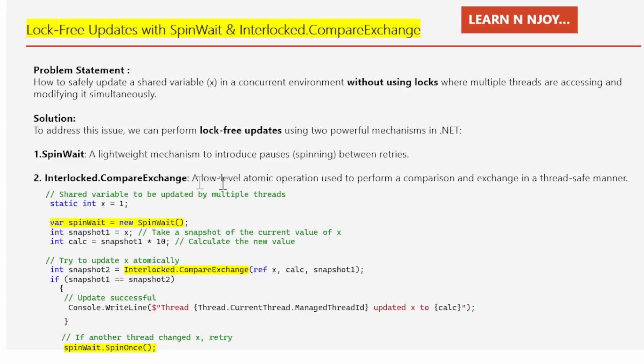Number two: Interlocked.CompareExchange — a low-level atomic operation used to perform a comparison and exchange in a thread-safe manner. Imagine we are trying to make an update only if we are sure no one else has made changes in the meantime. It's an atomic operation that compares the current value of the shared variable X with what the thread expects it to be. If the value hasn't changed, it safely updates it. But if another thread has already made changes, the operation fails and the thread tries again. This ensures every update happens in a thread-safe manner without the need for a traditional lock. By combining these two techniques, we can perform thread-safe updates without locks and keep our data safe even when multiple threads are working in parallel.